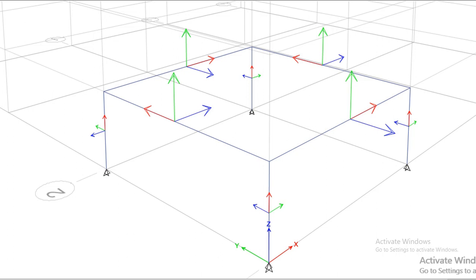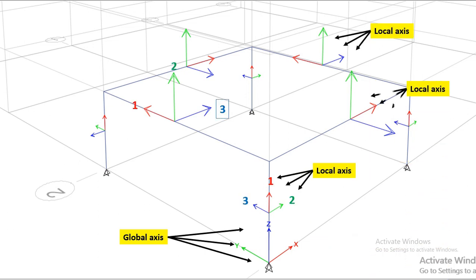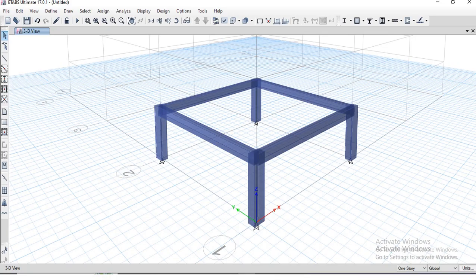Let's go to another figure. Here the x, y, and z are the global axis, and each component of structure system have their own local axis based on orientation, and is represented as 1, 2, and 3. This is the extruded view of previous system.